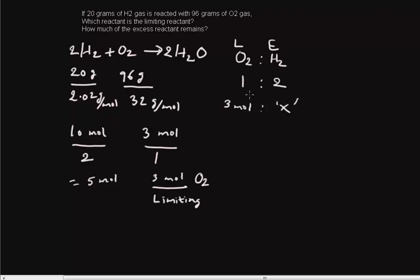If you calculate for x by cross multiplying, that would be 3 times 2 divided by 1 equals to x. So to react completely, you would need 6 moles of hydrogen gas.